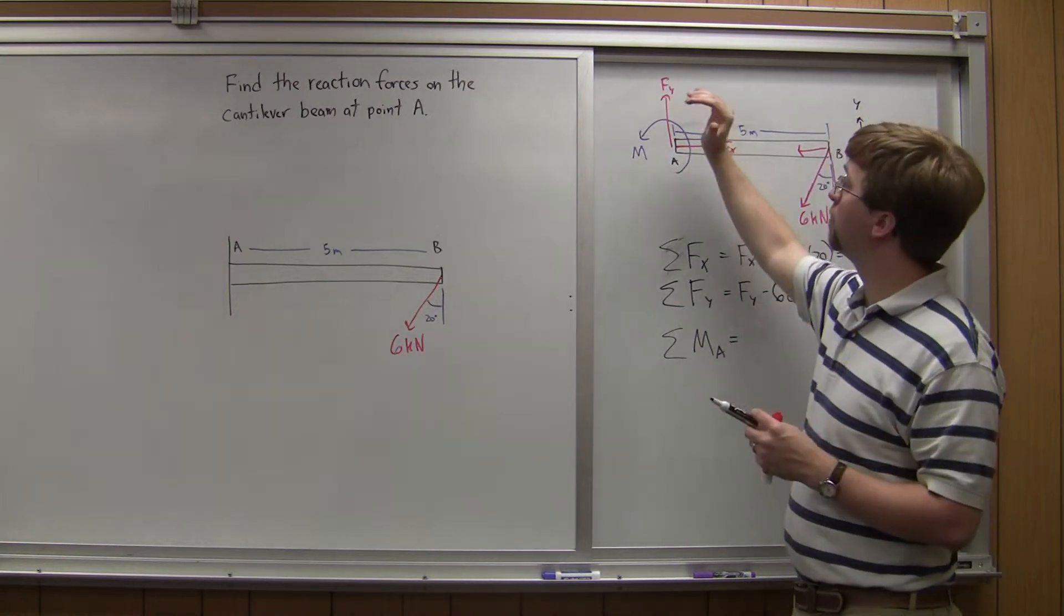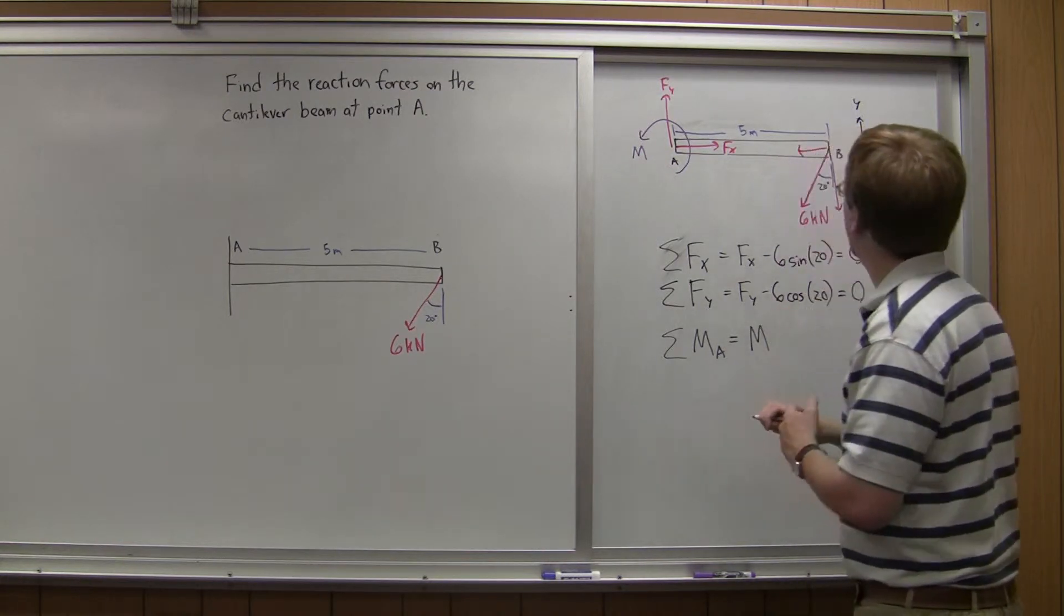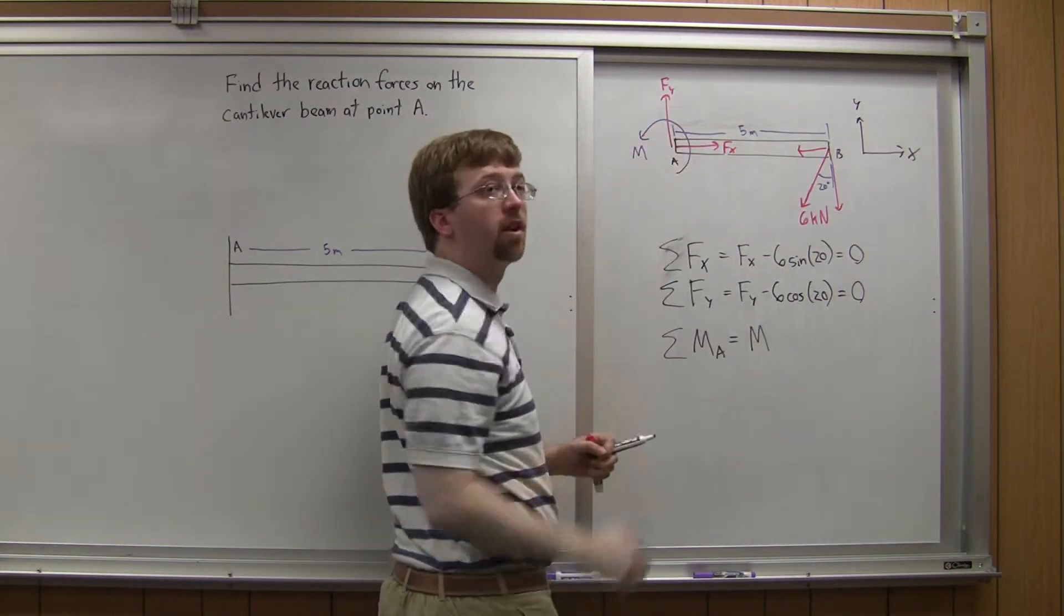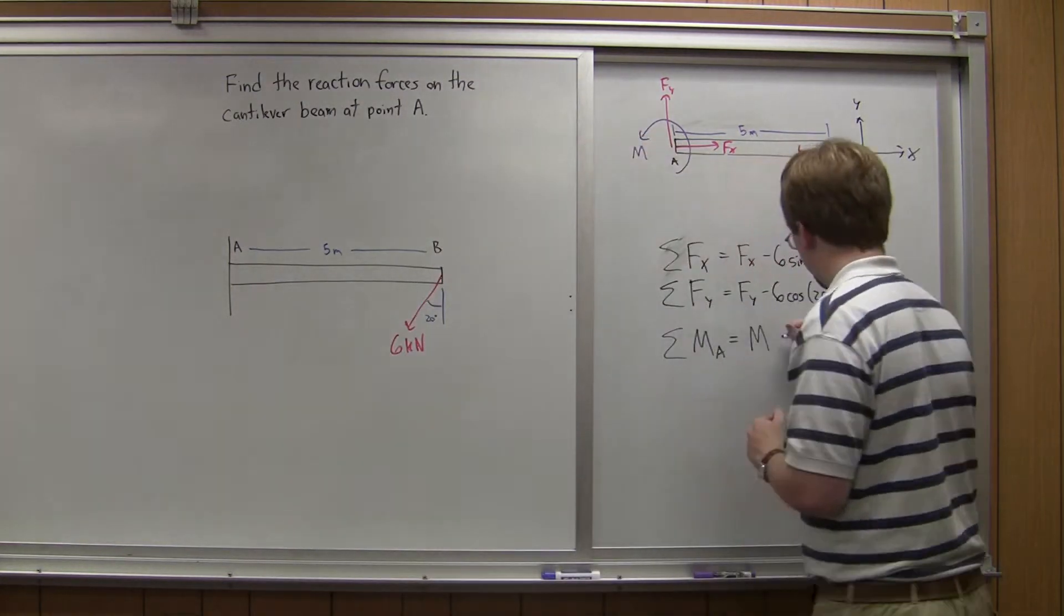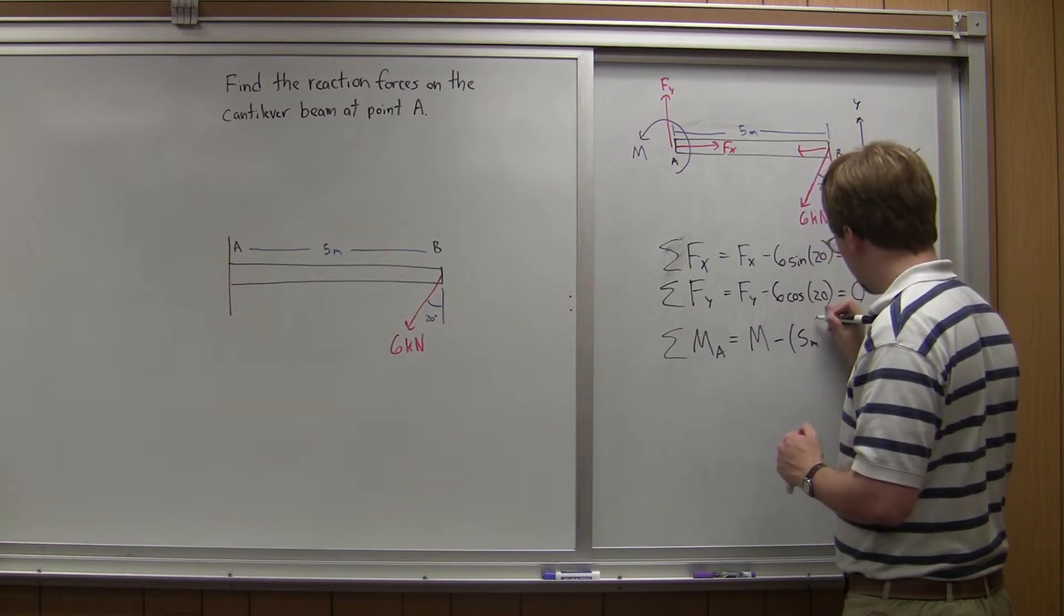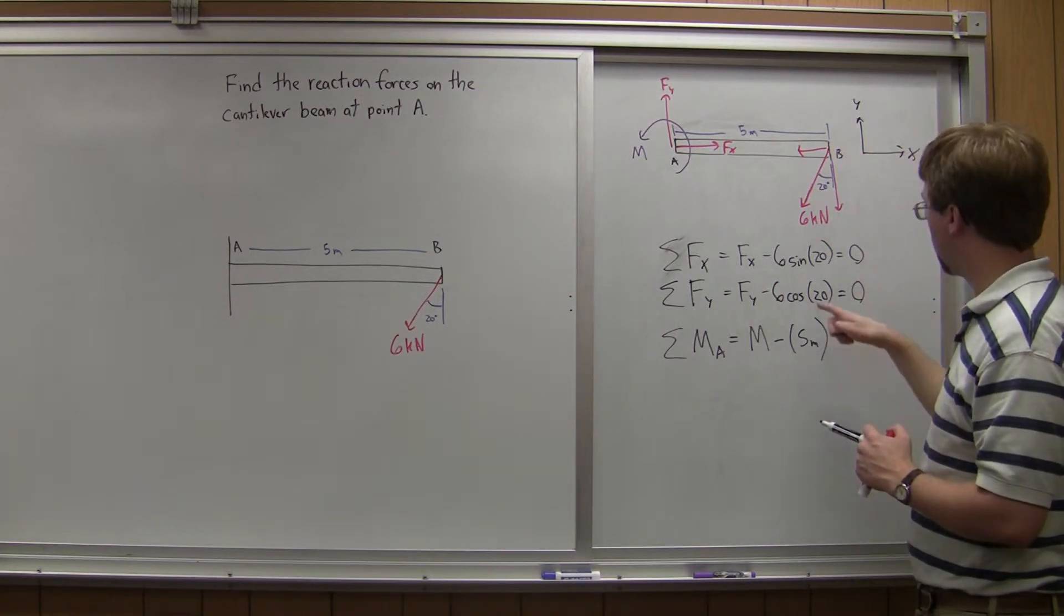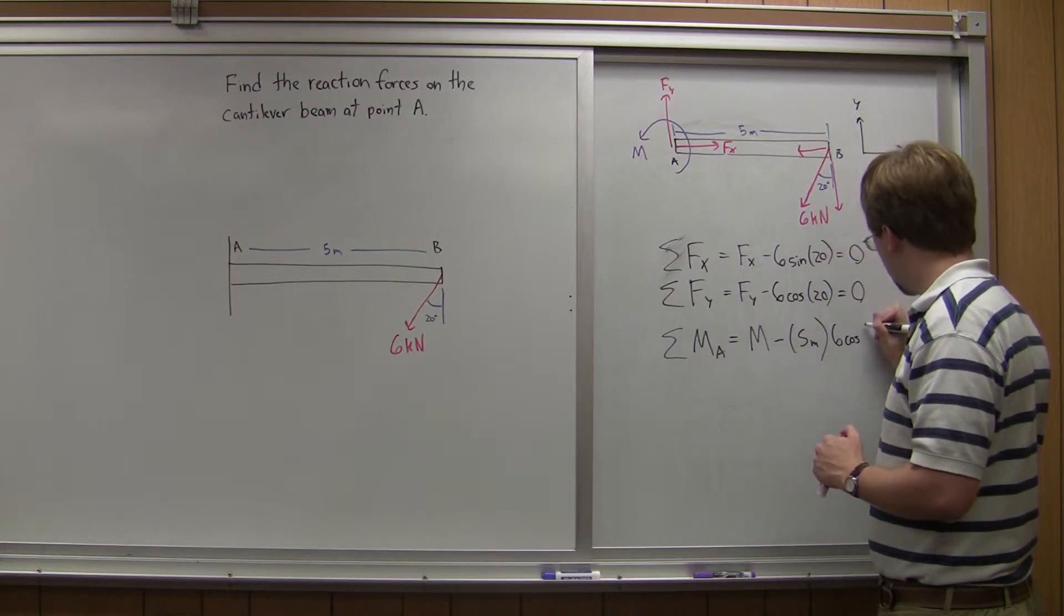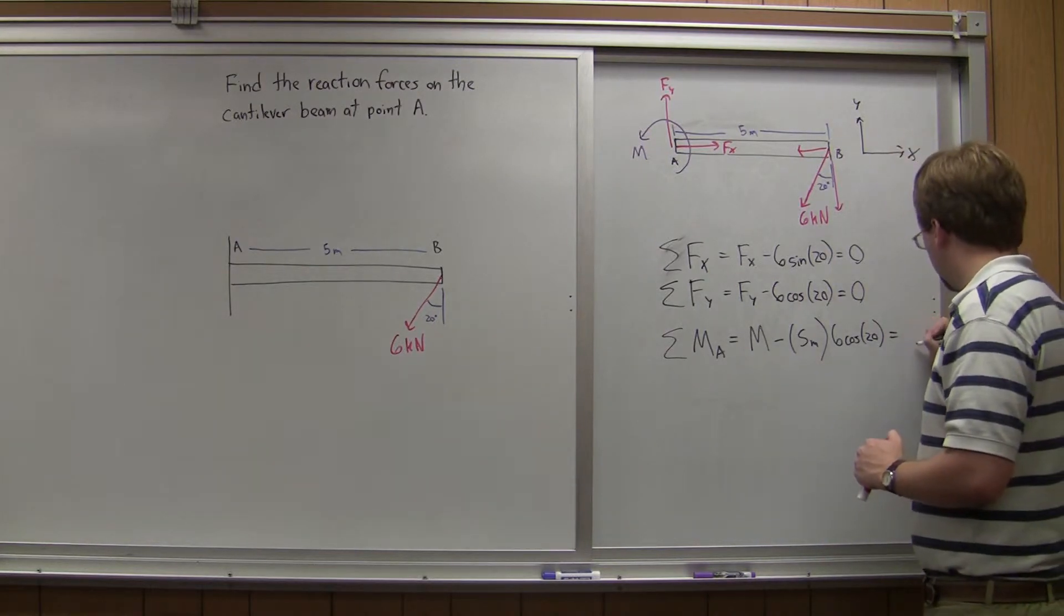And then, finally, the last thing I have in this equation is actually the moment at the reaction point. That is a positive moment, the way I drew it in. That will be the first thing I add. And then, the y component here is going to cause a negative moment in this direction. The distance is 5 meters, negative. And the y magnitude we had before was this 6 times the cosine of 20. And this is equal to zero as well.